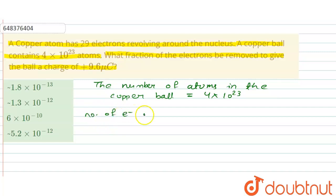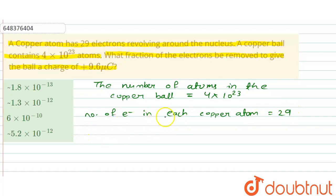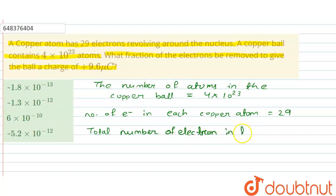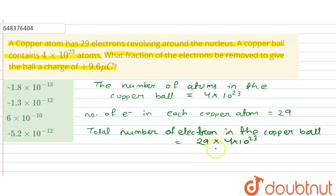The number of electrons in each copper atom is 29. So the total number of electrons in the copper ball is equal to 29 × 4 × 10²³.